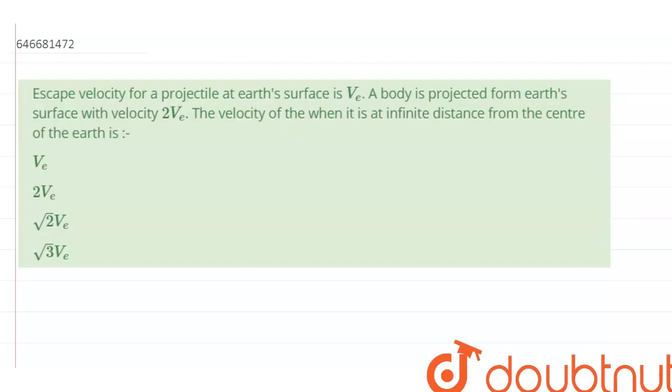Escape velocity for a projectile at earth's surface is V. A body is projected from the earth's surface with velocity 2V. The velocity of the object when it is at an infinite distance from the center of the earth is.